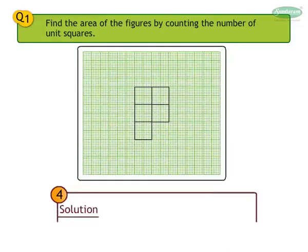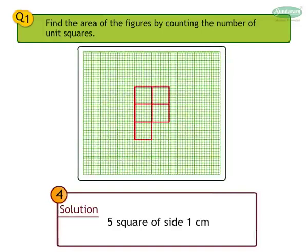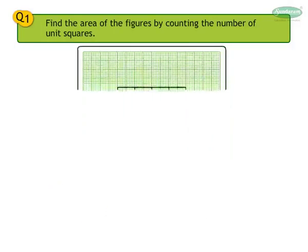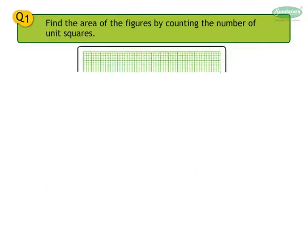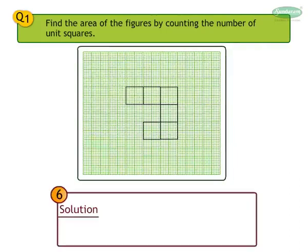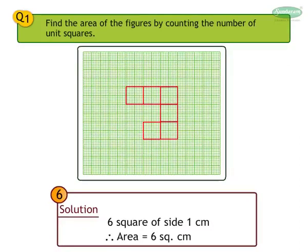Number 4 solution: 5 squares of side 1 cm. Therefore, area is equal to 5 cm². Number 5 solution: 11 squares of side 1 cm. Therefore, area is equal to 11 cm². Number 6 solution: 6 squares of side 1 cm. Therefore, area is equal to 6 cm².